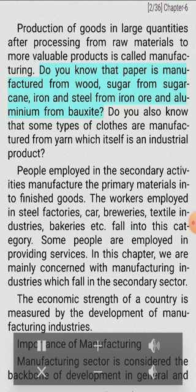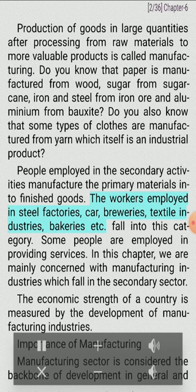Paper is manufactured from wood, sugar from sugarcane, iron and steel from iron ore, and aluminium from bauxite. Some types of clothes are manufactured from yarn which itself is an industrial product. People employed in secondary activities manufacture the primary materials into finished goods. The workers employed in steel factories, car, breweries, textile industries, bakeries etc. fall into this category. Some people are employed in providing services. In this chapter, we are mainly concerned with manufacturing industries which fall in the secondary sector.